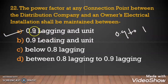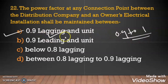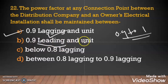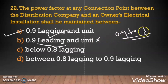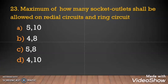Question 22: As per ADDC regulation, the power factor of 0.9 lagging to unity has to be maintained at the consumer end. So the first option is correct.